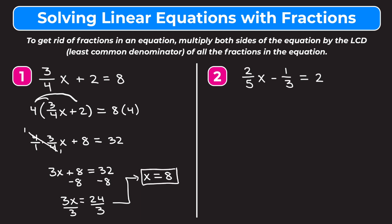Taking a look at example 2, this time we have two fractions: 2/5 and 1/3. So what we want to do is multiply both sides of our equation by the least common denominator of 5 and 3. The least common denominator is the same as the least common multiple, and the least common multiple of 5 and 3 is 15. So we're going to multiply both sides of our equation by 15.